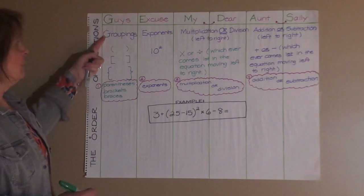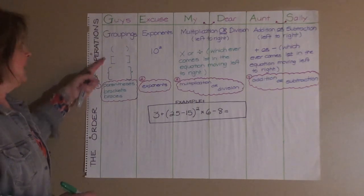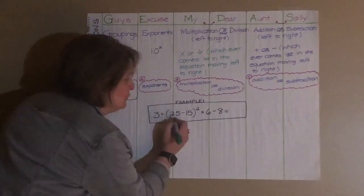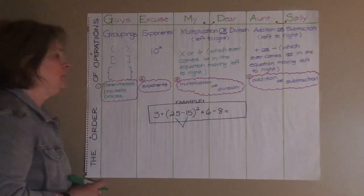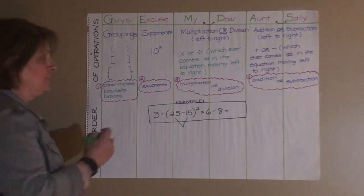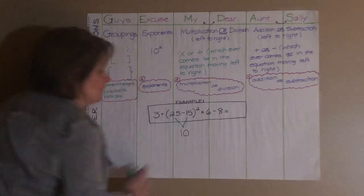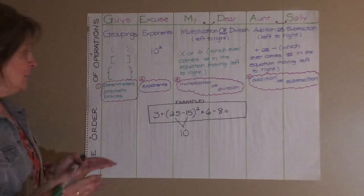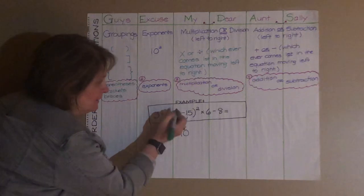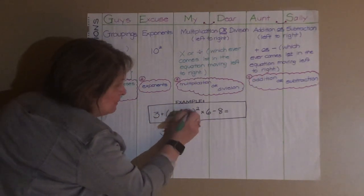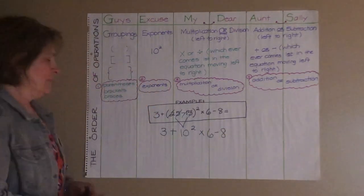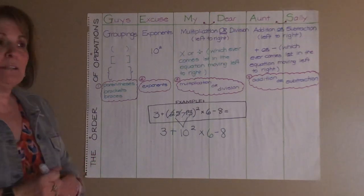First, we look at G for groupings. Do we have parentheses, brackets, or braces? And the answer is yes, we do. So we have to do what's in parentheses first. And that would be 25 minus 15. And 25 minus 15 is 10. So we keep that. We do what's in parentheses, and then we rewrite the entire equation, taking this part out of it. Okay, so now we've solved what's in parentheses.